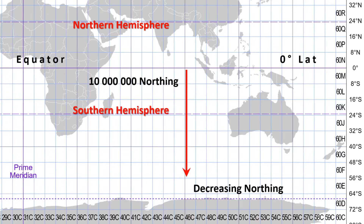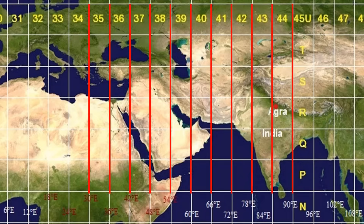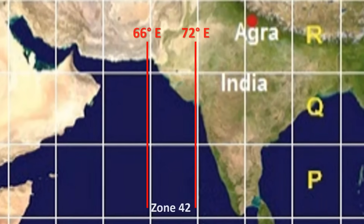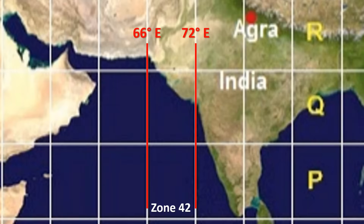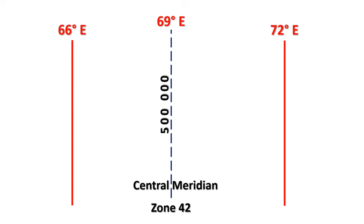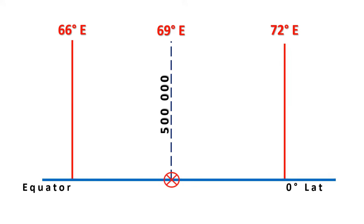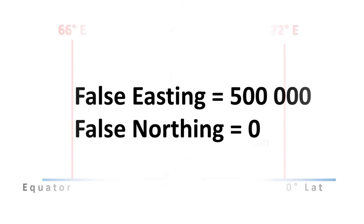What about Easting? Each zone boundary line is a meridian, and the center of the zone is called the Central Meridian. For example, zone 42 North of India has a boundary from longitude 66 degrees East to 72 degrees East, so the center longitude is 69 degrees East — this is the Central Meridian for zone 42. A value of 500,000 is assigned to the Central Meridian to avoid negative values in the coordinate system. We also call this 500,000 the false Easting, and zero Northing as the false Northing.